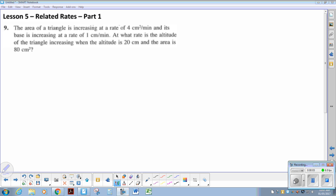Hello, welcome to Unit 4, Lesson 5, Related Rates Part 1. I'm looking at Question 9 from Part 1. It tells us the area of a triangle is increasing, so dA by dt is increasing at a positive 4 centimeters squared per minute.